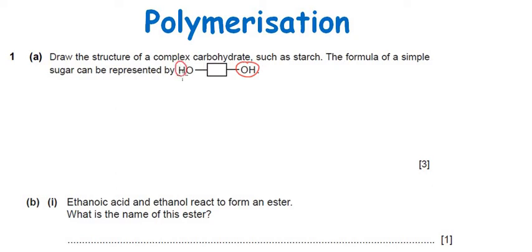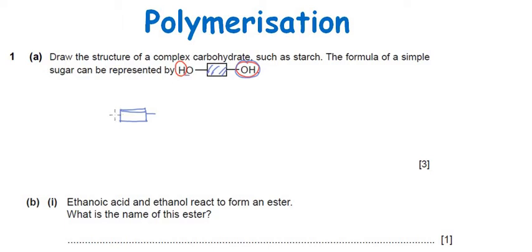We then join the monomers all together. Drawing the polymerization, we start with the common group as represented, then we have removed the OH group — so we are left with only one bond — and from the other side we have removed only H, so we are left with O.